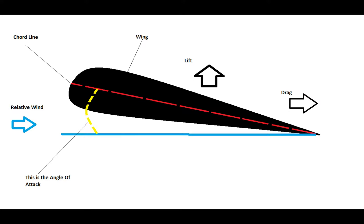The cord line is basically an imaginary line that you draw from the leading edge — the front — to the trailing edge of the wing — the back. So from front to back, you draw a line, and that red line represents the cord line. Relative wind is not the same as the meteorological wind direction. Relative wind is wind in relation to your aircraft, and particularly in relation to your aircraft's flight path — it will always be directly opposite to the aircraft's flight path.